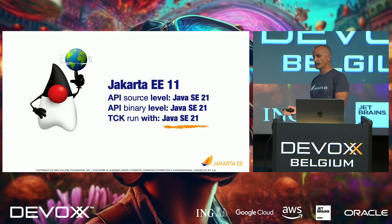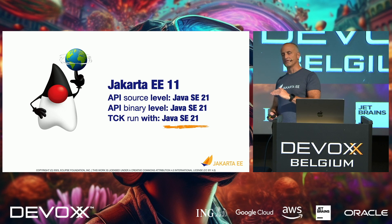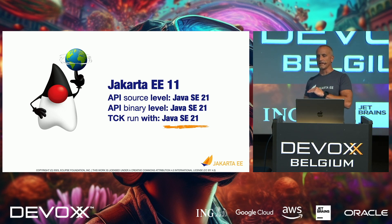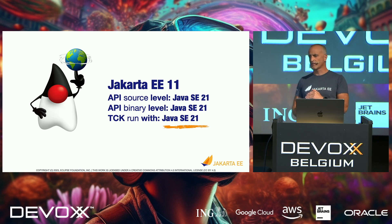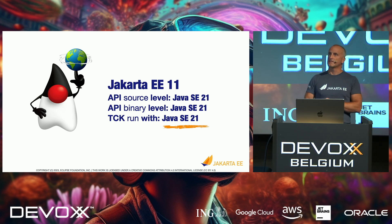For Jakarta EE 11, we're actually raising the API level that we will compile our APIs to Java 21. That means you have to use Java 21 in order to use Jakarta EE 11. This is a bold move to jump that far, but it also enables us to use some of the Java 21 features in our specifications.